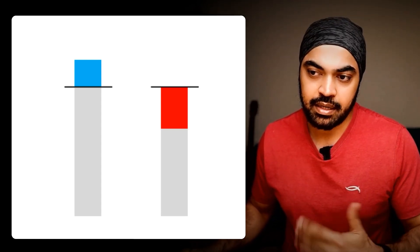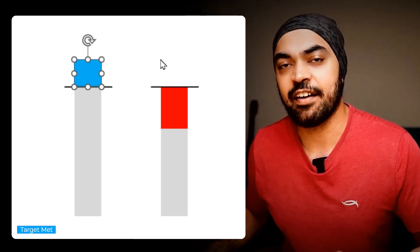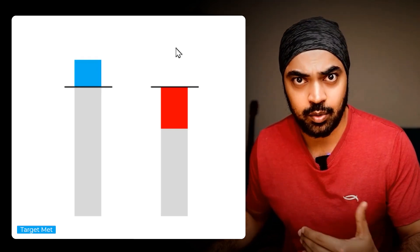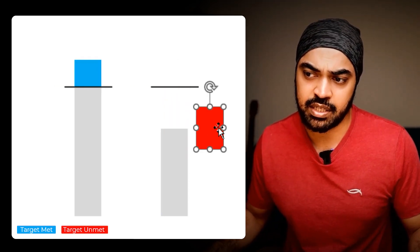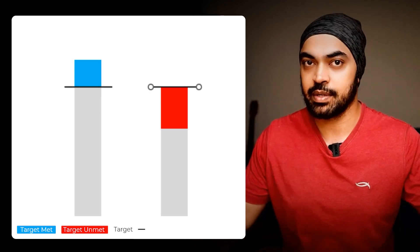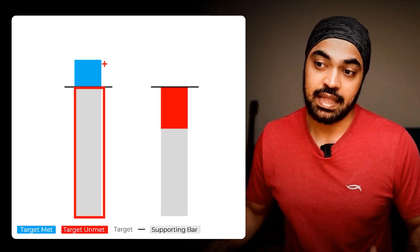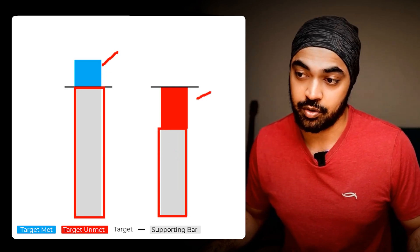Before building Chart 2, it's important to understand the logic. I have a small mockup of the chart. There are four essential ingredients: the surplus bar showing how much extra was achieved; the unmet portion showing the deficit; the budget shown as a dashed line; and a supporting bar on top of which either the surplus or unmet bar will stand.